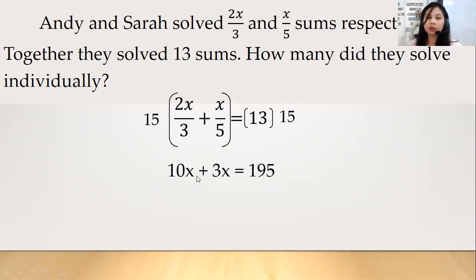Okay, so ngayon simplify lang natin. Combine like terms na tayo. 10x plus 3x is 13x. And then copyin lang si 195. And then since may kasama pang coefficient yung ating variable, we have to eliminate that. So divide both side by 13. So we will have x is equals to 15. Okay, so ang ating value of x is 15 po.